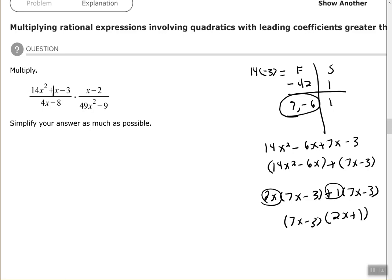Okay. All right. So for that numerator, that's seven x minus three times two x plus one. For my denominator, my first denominator there, I have a GCF of four.